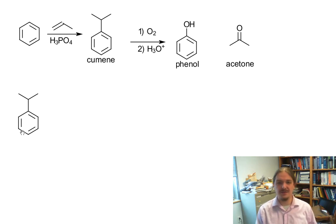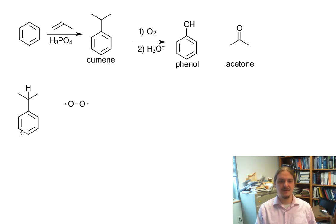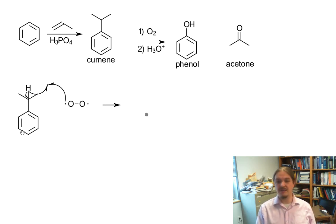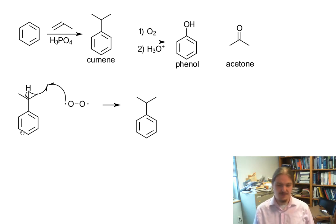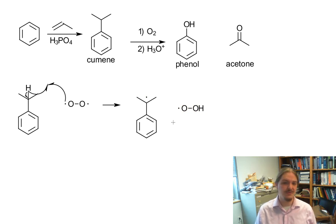How does this conversion of cumene to phenol work? It's an oxidation reaction with oxygen, and oxygen is a diradical. So this is actually a radical reaction where oxygen as a radical will abstract one of the hydrogen atoms — this hydrogen atom specifically — from cumene to make the cumene radical. And the other product of that reaction is the hydroperoxide radical, HO2 radical.